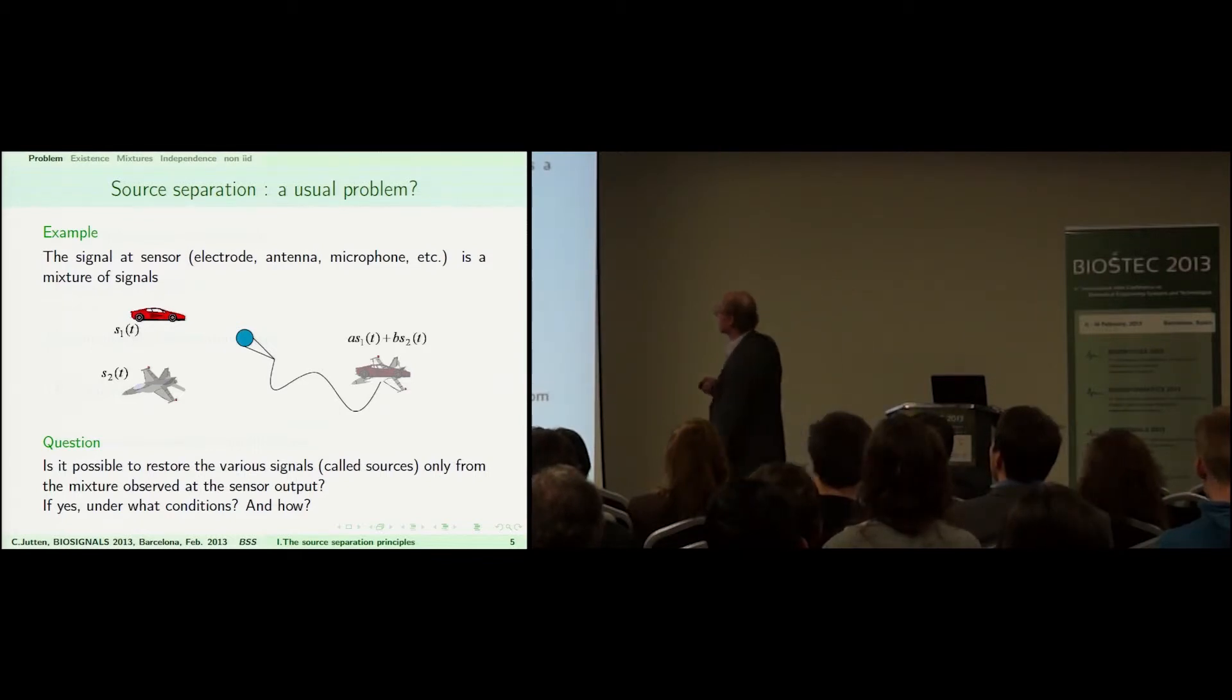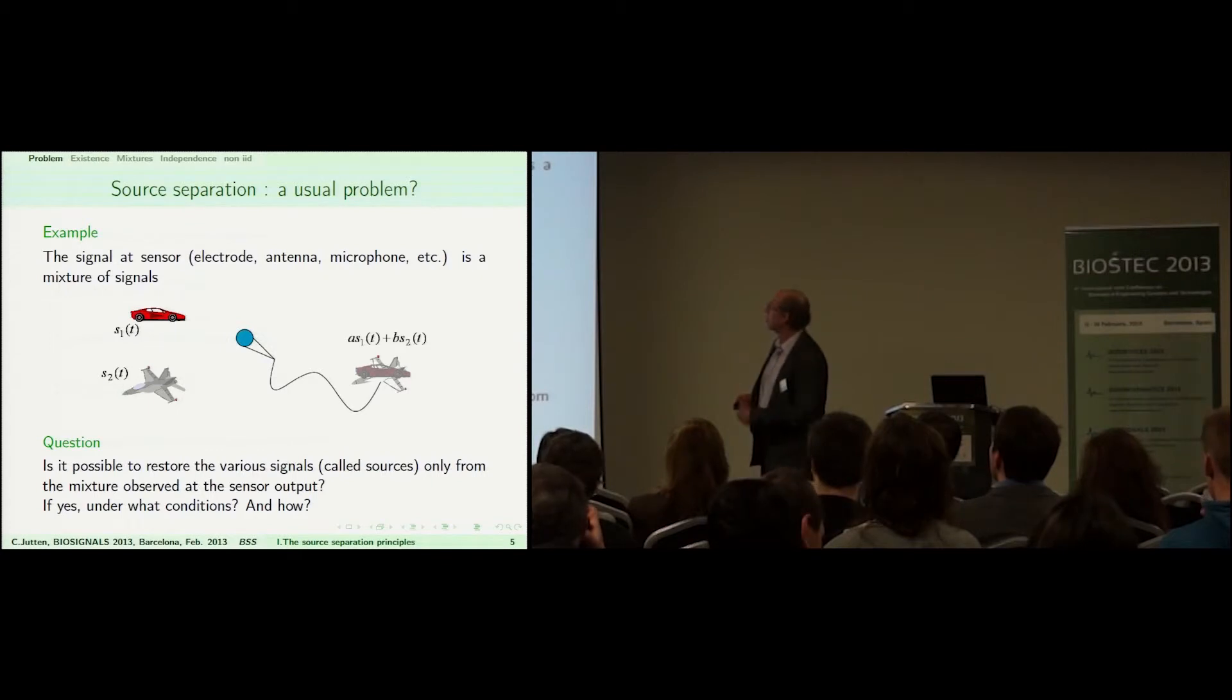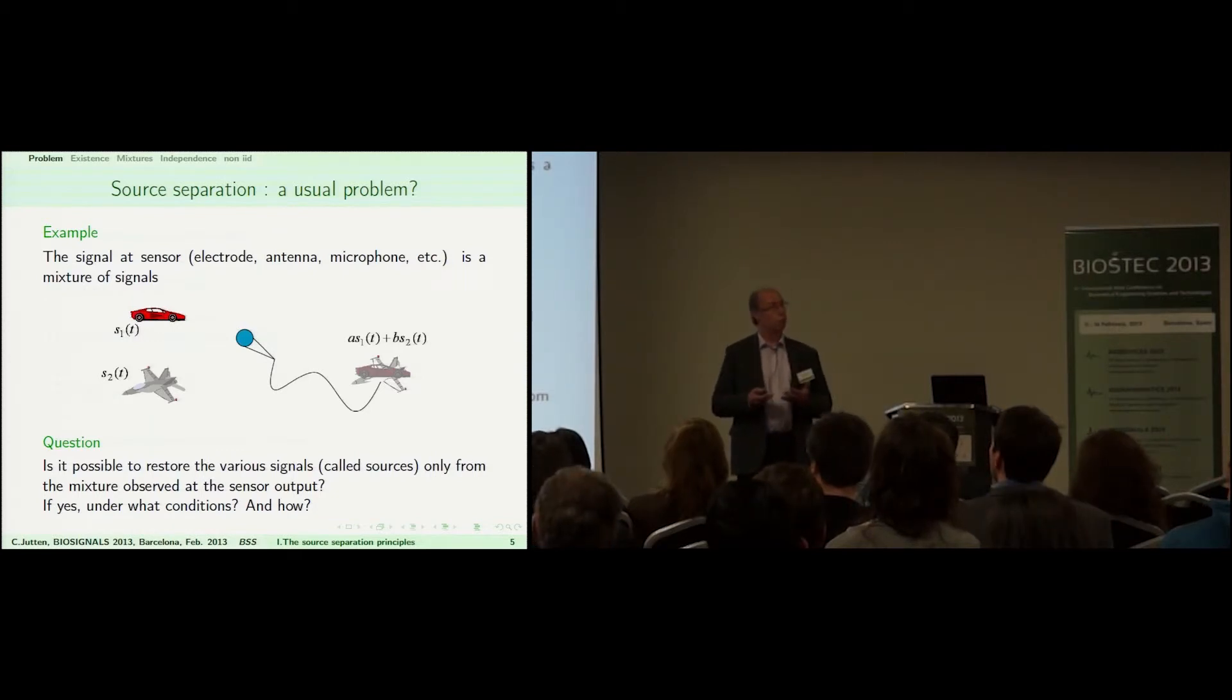When you have one sensor, like on this figure, for instance a microphone, and you have two sources which emit sounds around, what you record on this signal is a mixture of the two signals.